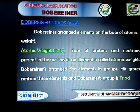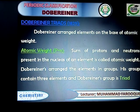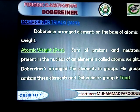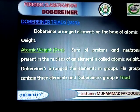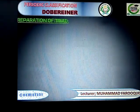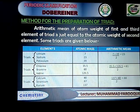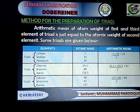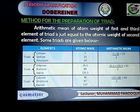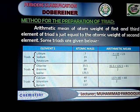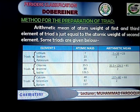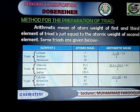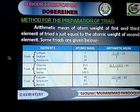Dobereiner arranged the elements into groups, and each group contains three elements. So Dobereiner's group is called a triad, which means a group of three elements. Now we will discuss the method for the preparation of a triad. The arithmetic mean of the first and third element of a triad is just equal to the atomic mass of the second element of the triad.